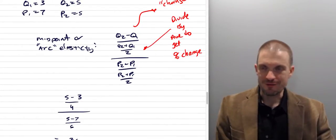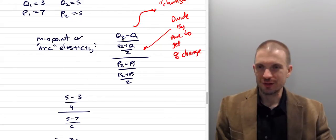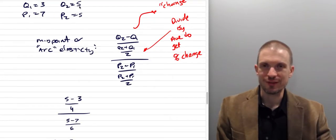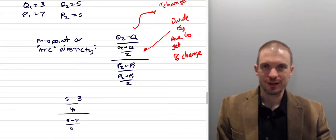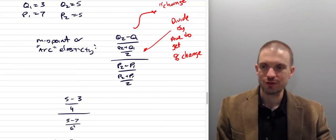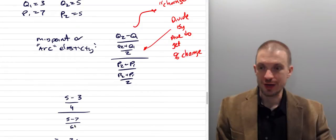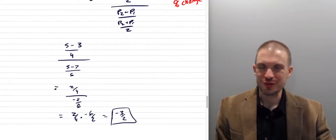Our initial point is (3,7) and our subsequent point is (5,5). So we take Q2 minus Q1: five minus three equals two, divided by four — the average of three and five, since three plus five is eight divided by two equals four. For price: P2 minus P1 is five minus seven, which is negative two, divided by six — the average price, since seven plus five is twelve divided by two equals six.